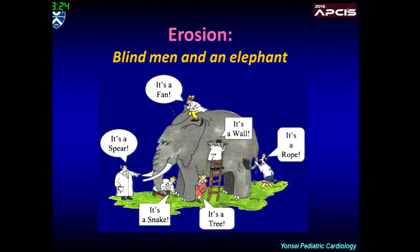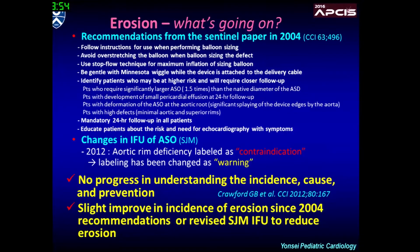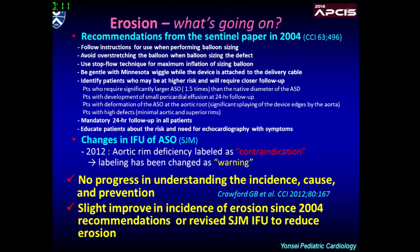The next topic is erosion. Even though this issue draws huge attention, we don't have enough knowledge nor a solution for this very complicated problem. Erosion is a very rare but possibly fatal complication. It occurs at the atrium-to-aortic junction or at the roof of the atria. Several risk factors are known, such as aortic rim deficiency, vigorous Minnesota Wiggle, septal malalignment, and others. We all know the recommendation from the Sentinel paper published in 2004. There have been some improvements in the incidence of erosion since those 2004 recommendations, but no significant progress in understanding the definite cause or finding a reasonable solution.